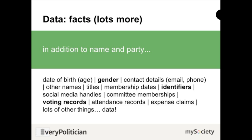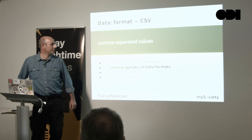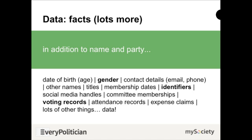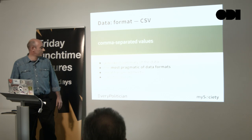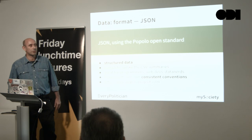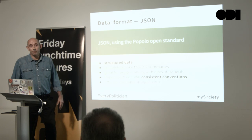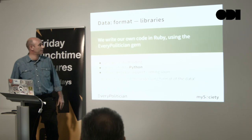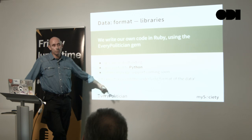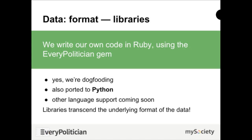What format are we doing this in? The trick is to keep it simple and useful. We're presenting the data in four ways. First, CSV — comma-separated values — the friendly next-door neighbour of data that people open in spreadsheets, easy to consume. We're also making it available as structured data in JSON using the open standard Popolo, with our own consistent conventions. We also provide libraries for developers — the main one is the EveryPolitician Ruby gem, as most of the code has been written in Ruby. It's also been ported to Python.